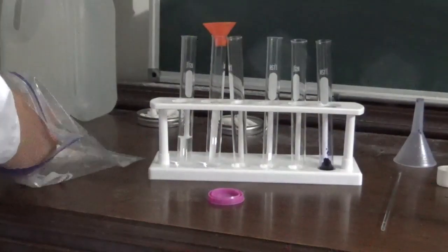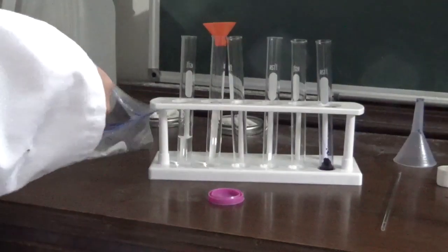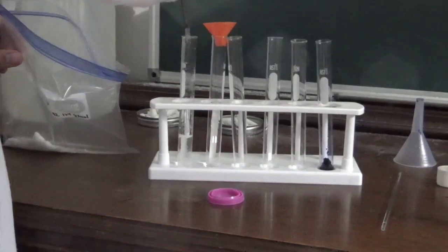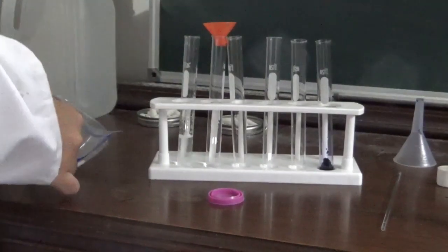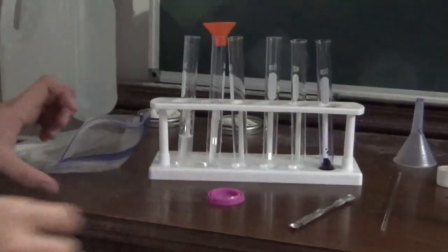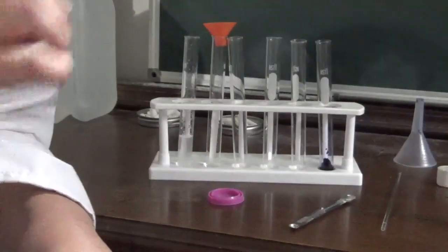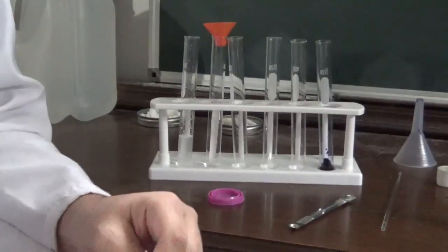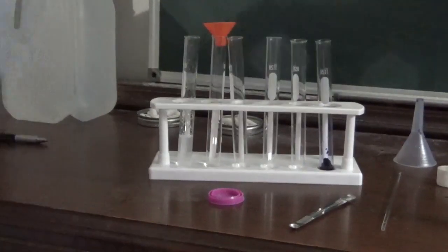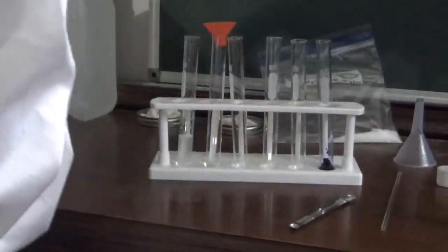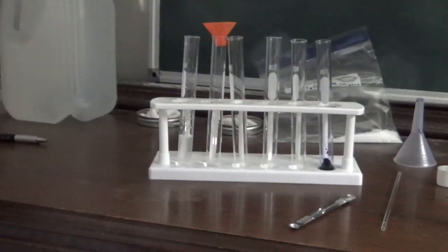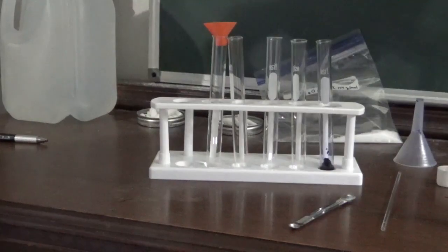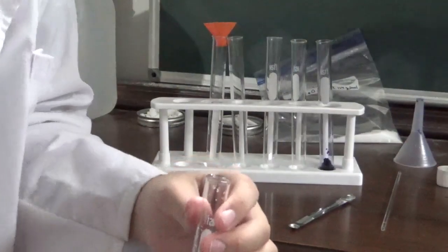And to this first test tube, I'm going to add some citric acid. Citric acid, of course, is one of the sour acids that you can find in a lot of fruits. So like oranges, for instance, have citric acid in them, and that's part of the reason why it gives you that sour flavor.